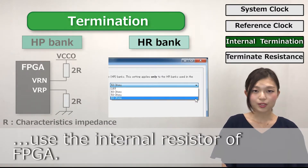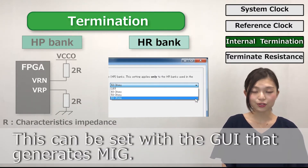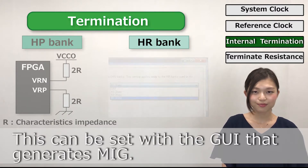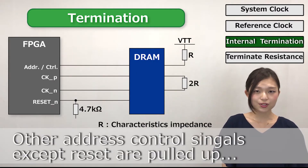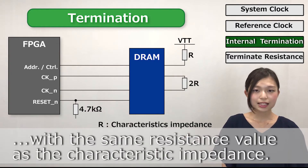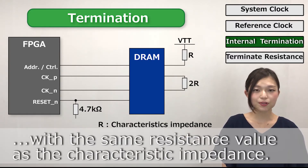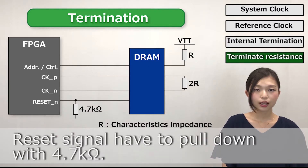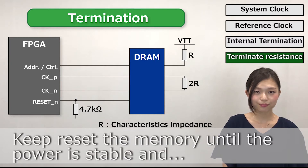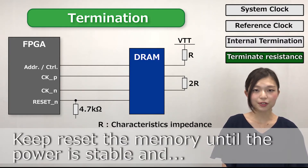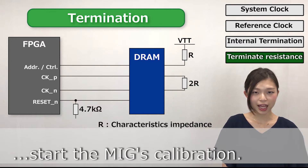Use the internal resistor for the FPGA. This can be set with the wizard that generates MIG. Other address and control signals, including reset and APUF, should use the same resistance value at the characteristic impedance. The reset signal must be pulled down with 4.7 kOhm to keep the memory in reset until the power is stable, then start the MIG calibration.